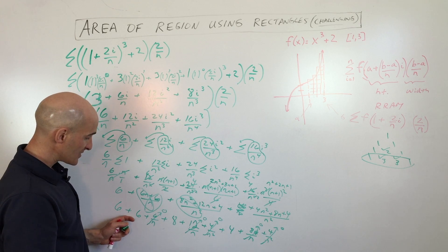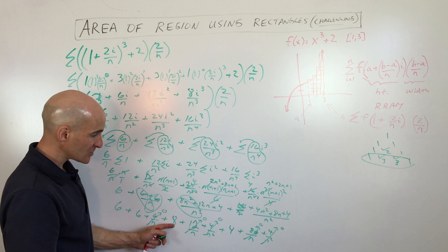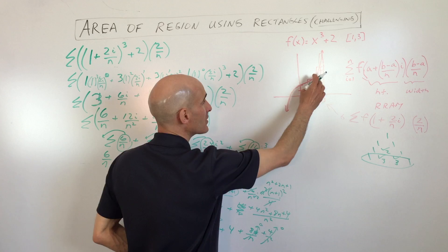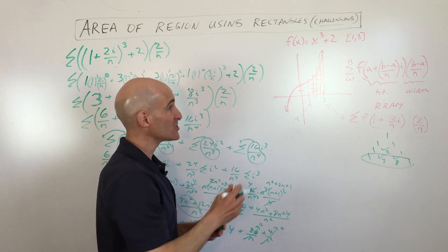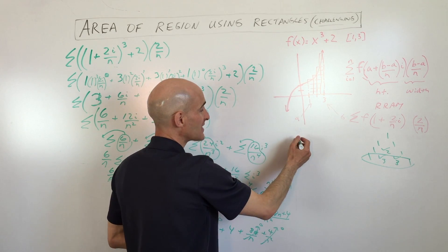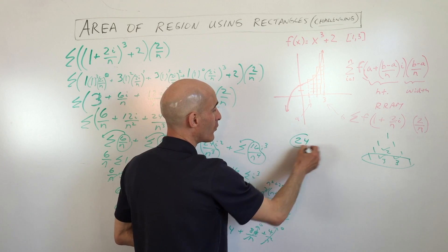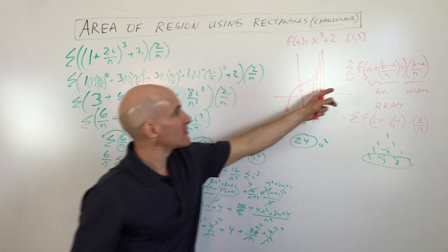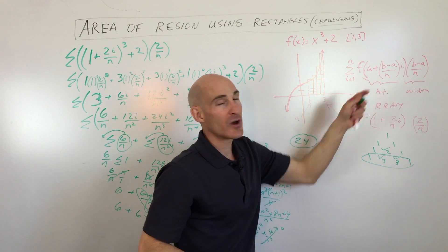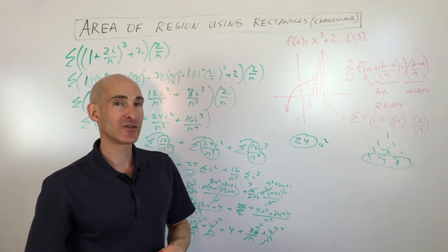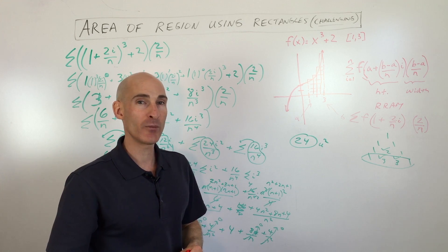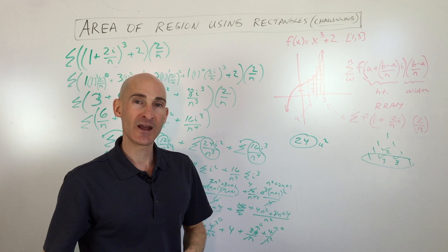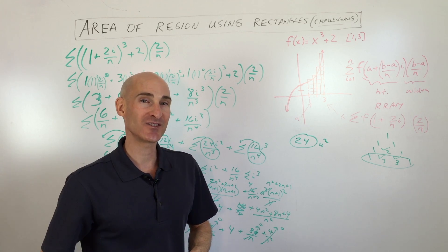What do we have left? Six plus six is twelve, plus eight is twenty, plus four is twenty-four. So the exact area of this irregular-shaped region below the curve and in between the x-axis is going to be 24 square units. This is the formula you want to memorize. Check out my past video on this concept for additional help, subscribe to the channel, and I'll look forward to seeing you in future videos.